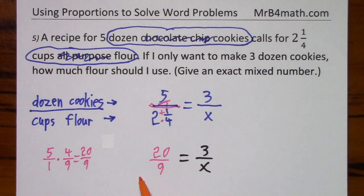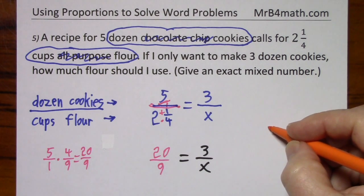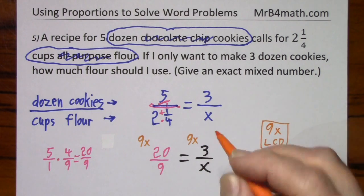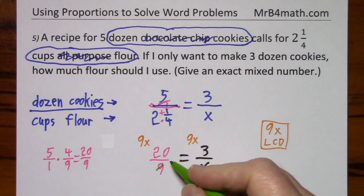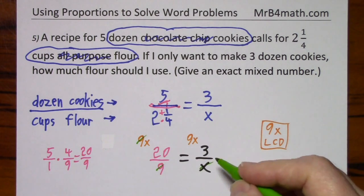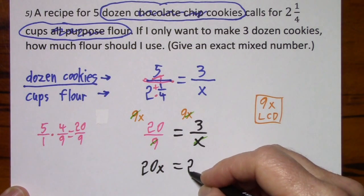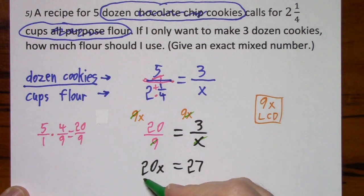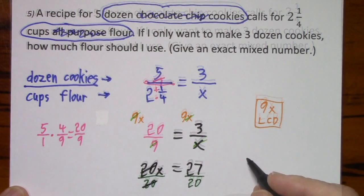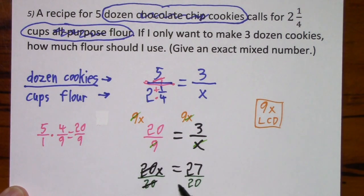I'll just bring this down. And again, I'm just going to clear it of fractions. The LCD is nine X. The nines cancel, the X's cancel. We're left with 20 X, it's equal to 27. Get rid of this 20, so divide by 20. Of course they cancel. And we have, I'll write this off to the side, X is equal to 27 twentieths.